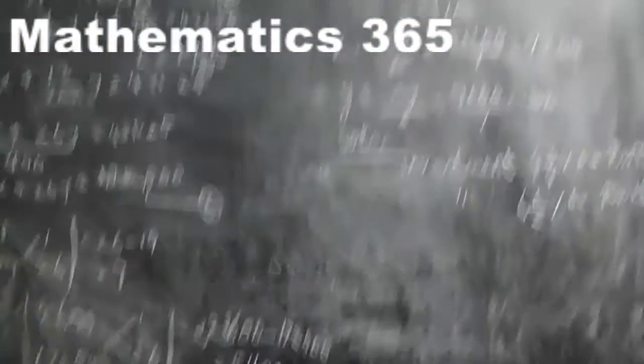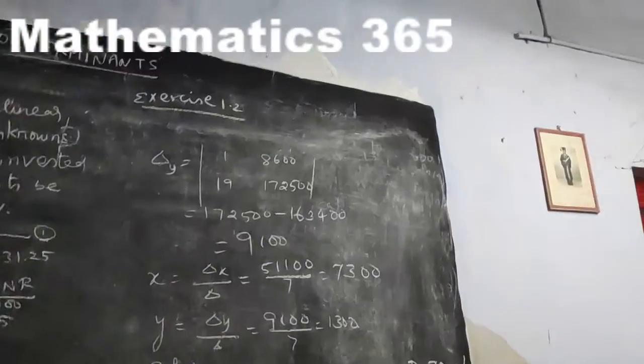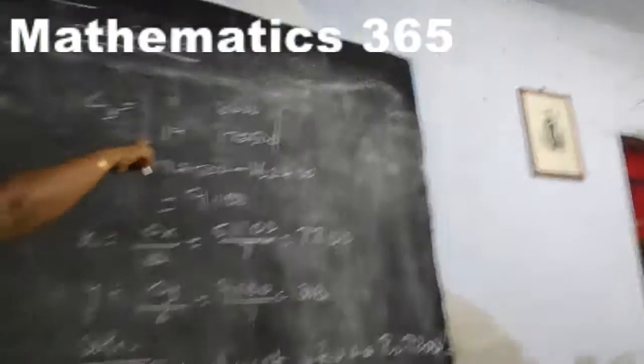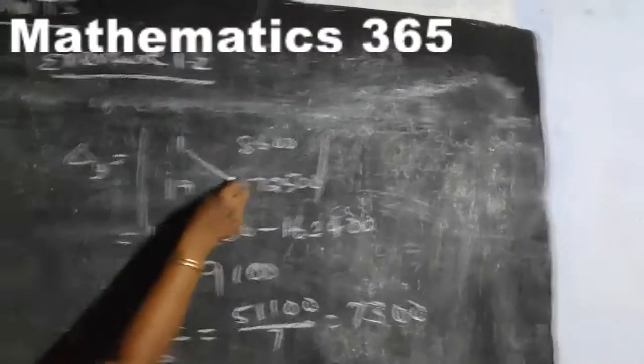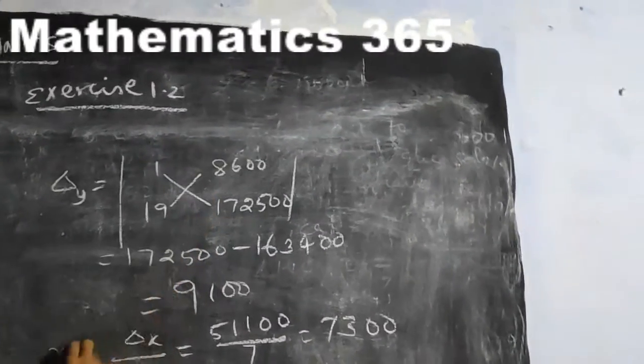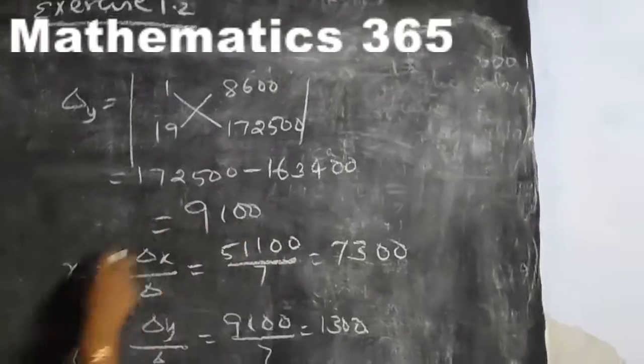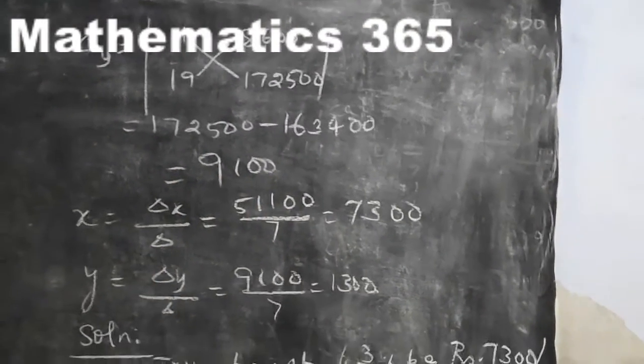Delta Y is calculated by replacing the Y column with the constants. Using left diagonal minus right diagonal, the result is 9100.